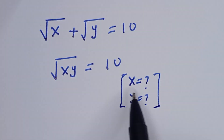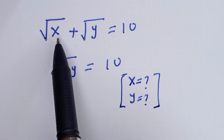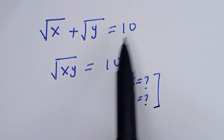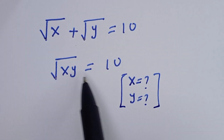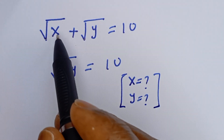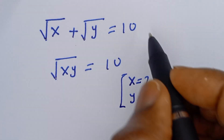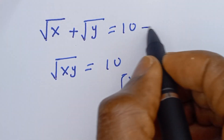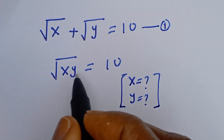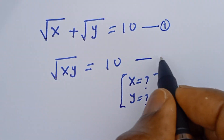Hello. How to solve for x and y in this equation: square root of x plus square root of y is equal to 10, and square root of xy is equal to 10. From here, square root of x plus square root of y is equal to 10 — let's call this equation 1. Square root of xy is equal to 10 — let's call this equation 2.